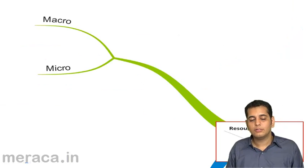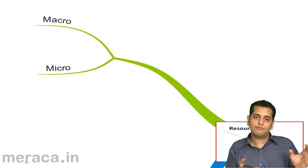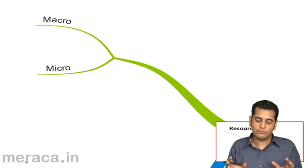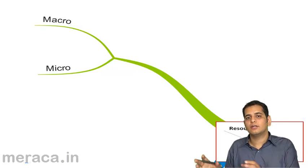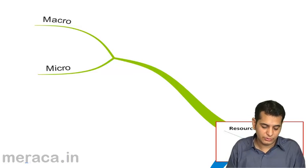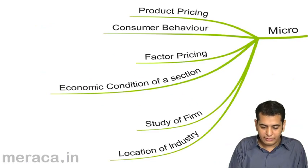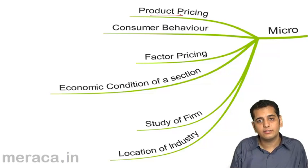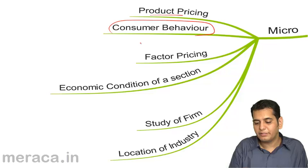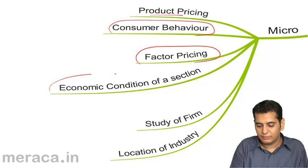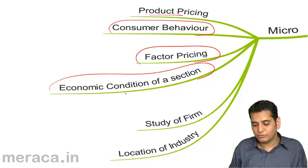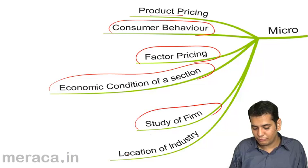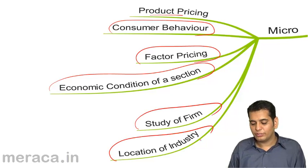Then we move to study economics. We said economics is studied in two parts. First is the microeconomics, the other is the macroeconomics. What we studied in microeconomics is product pricing, consumer behavior, factor pricing, economic conditions of a section, study of a firm, location of an industry.